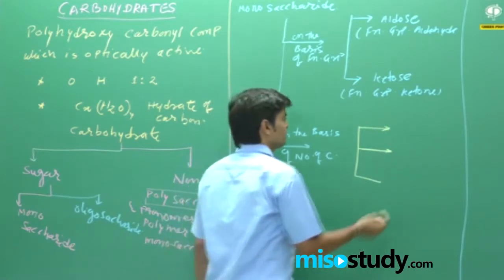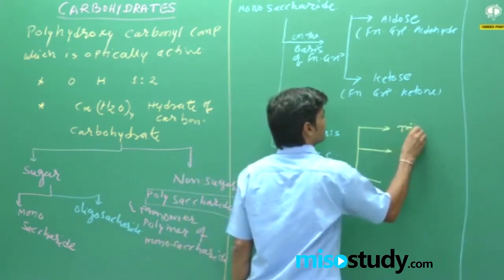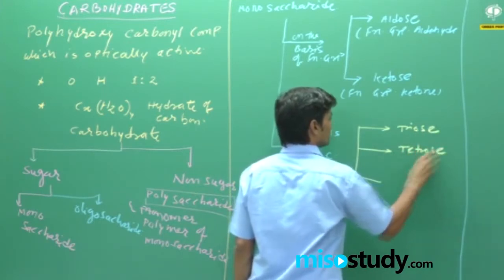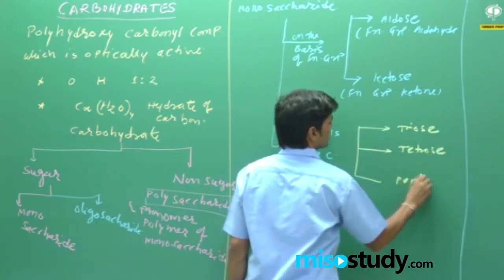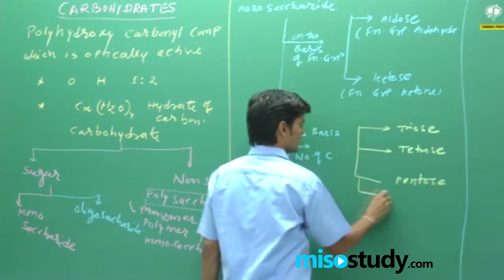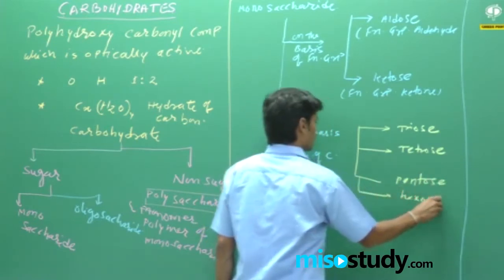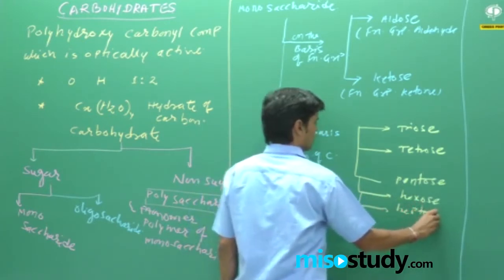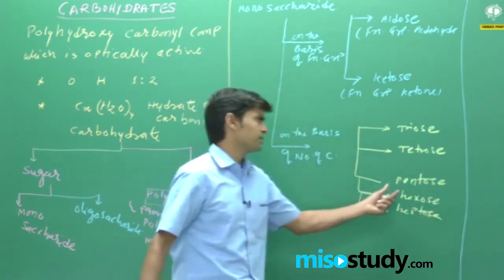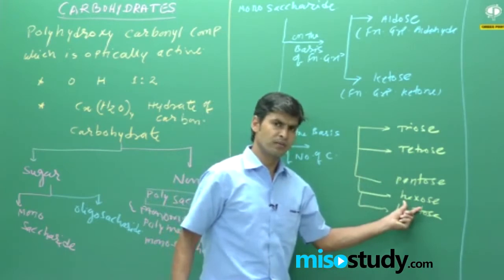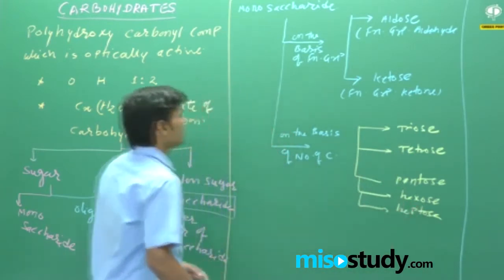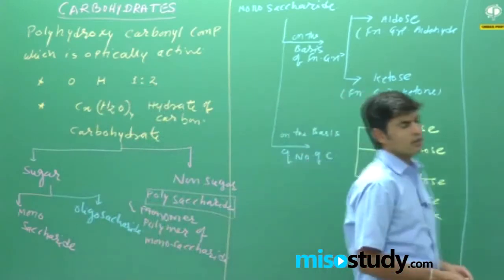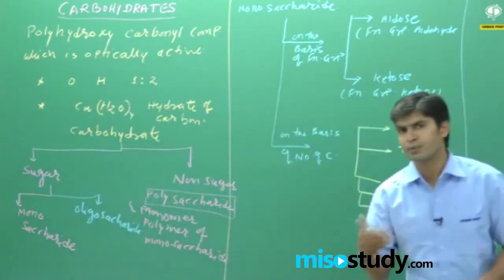Generally, monosaccharides have 3 to 7 carbons. A 3-carbon monosaccharide is called a triose, then tetrose, pentose, hexose, and heptose. The most common is hexose. So monosaccharides can be classified from 3 to 6 carbons mainly.